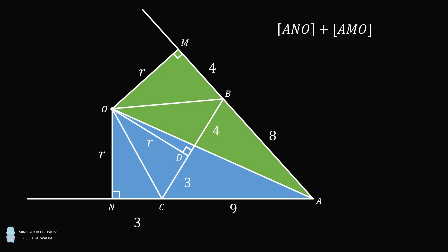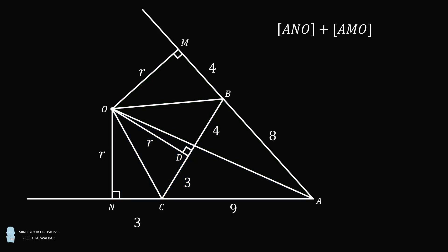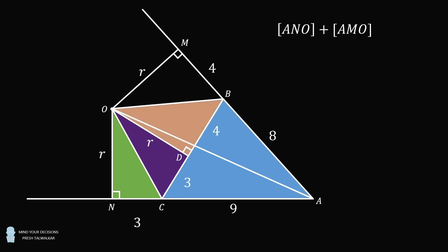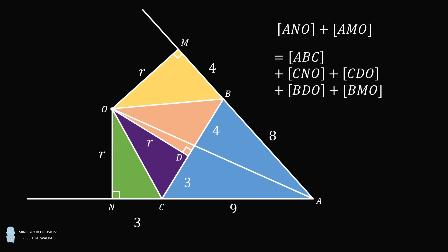Its area will be equal to the area of two right triangles. It'll be ANO plus AMO. But we can also calculate the area in another way. The area of this quadrilateral will also be equal to the area of triangle ABC, plus the area of triangle CNO, plus the area of triangle CDO, plus the area of triangle BDO, plus the area of triangle BMO. So, we have two different ways of expressing the same area, therefore they're equal to each other.